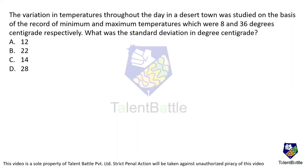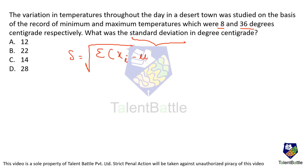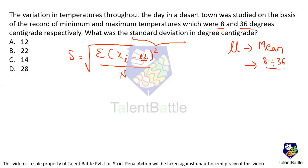The variation in temperatures throughout the day in a desert town was studied. The minimum and maximum temperatures recorded were 8 and 36 degrees centigrade respectively. What is the standard deviation? Standard deviation S equals root of sigma (Xi minus mu) squared divided by N, where mu is the mean. Mean equals minimum plus maximum divided by 2: 8 plus 36 divided by 2 equals 22.